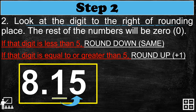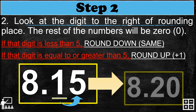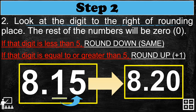Rounding up means we add one to the rounding digit, which is one. So one plus one gives you two. Our new decimal is 8.2. It became two because the digit to the right was equal to five, so we rounded up.